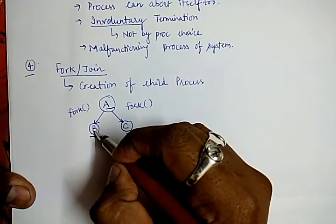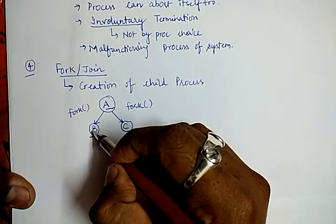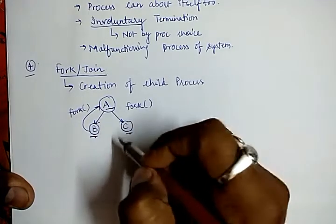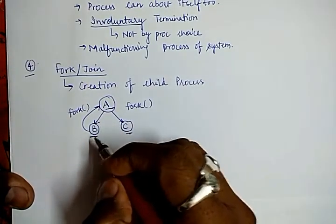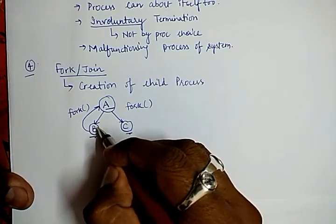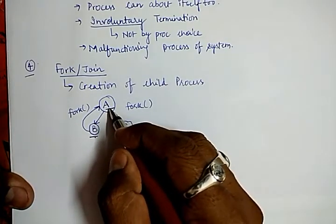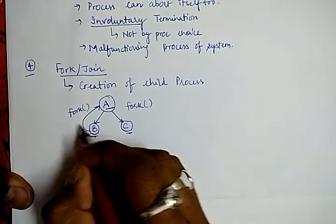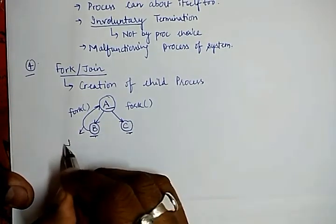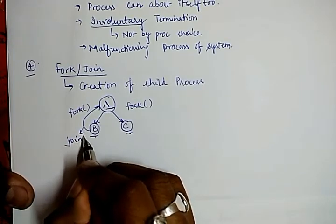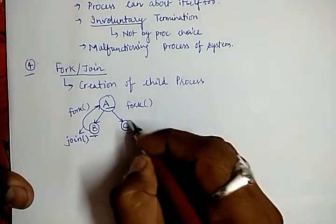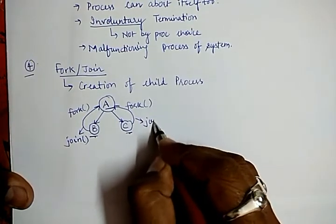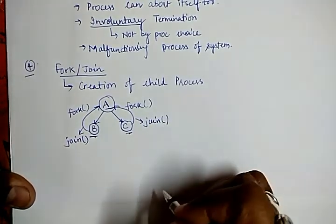In such cases, B will terminate itself but before terminating it generates a call to its parent that it has completed its work and its completed task needs to be rejoined with the parent's task. For this a system call is generated which is called as join. Similarly, it is the case with the child process C.